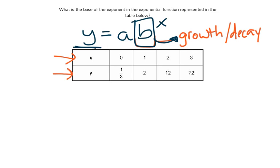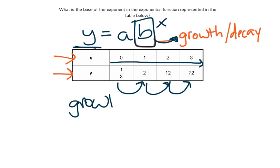And the base of the exponent represents by how much is this value growing or decaying. So let's take a look at this table. For every change in x, y goes from 1 third to 2, from 2 to 12, from 12 to 72. So it definitely looks like we're having exponential growth here, which means that our base is going to be greater than 1.